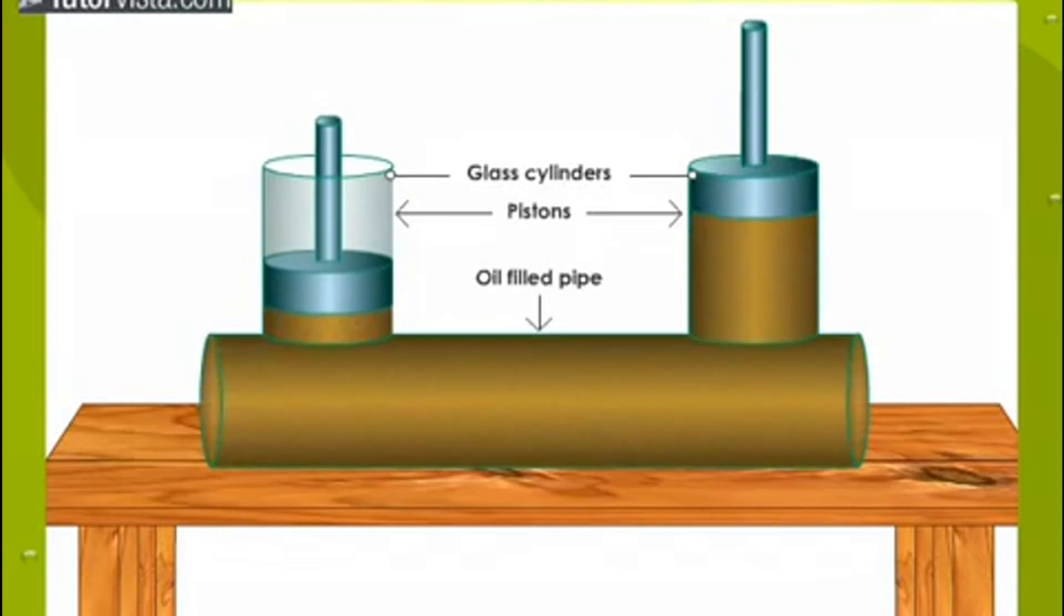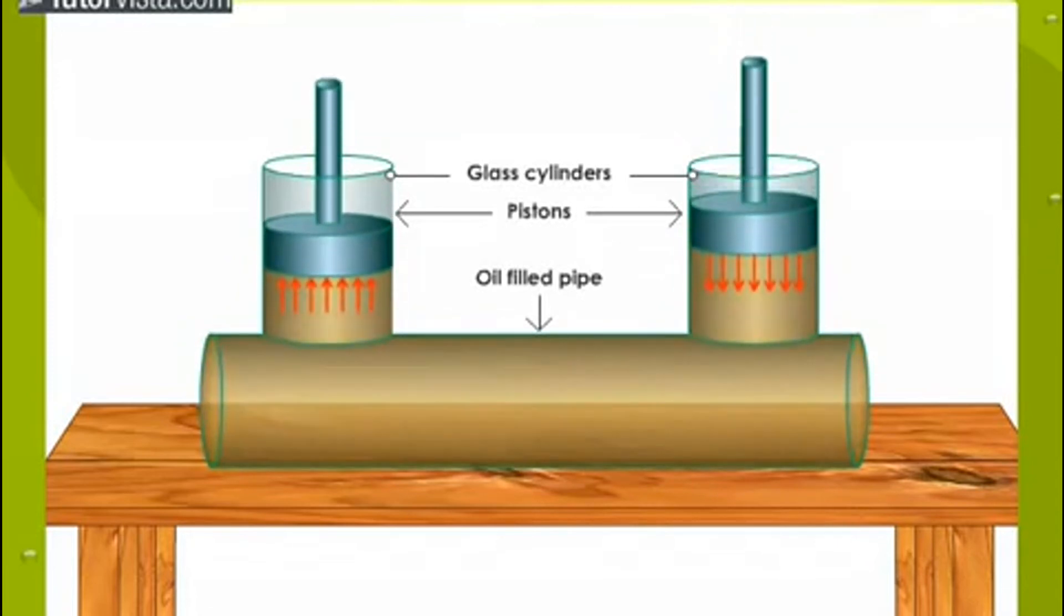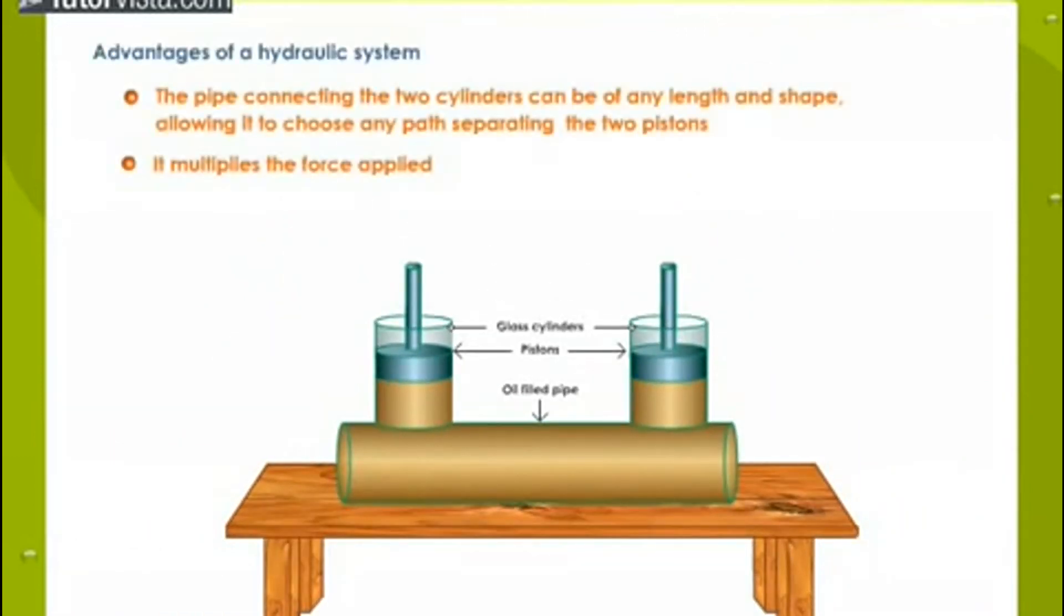Thus, most of the applied force appears at the second piston. The advantage of hydraulic systems is that the pipe connecting the two cylinders can be of any length and shape, allowing it to choose any path separating the two pistons. The other advantage is that it multiplies the force applied.